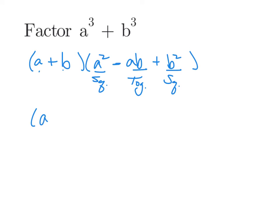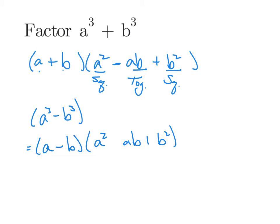If we start with A cubed minus B cubed — the difference of two cubes — we take the cube root of each term to get A minus B, then apply square, together, square: A squared, AB, B squared. We always finish with a plus, but what's in the middle has to be the opposite of what's in the middle of the smaller factor, so it's plus AB. That gives us (A − B)(A² + AB + B²).